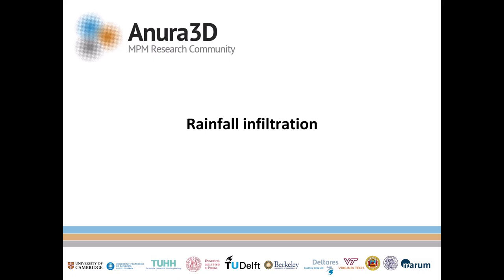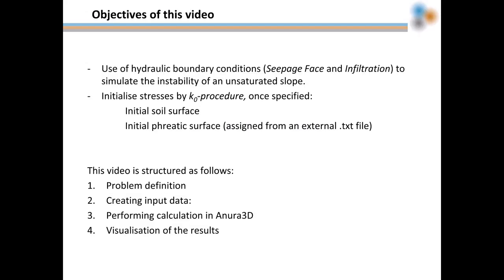This is a video tutorial to guide you in the simulation of the slope instability due to rainfall infiltration exercise presented in Chapter 11 of the Tutorial Manual. The objective is to learn how to deal with the implemented hydraulic boundary conditions, in particular the seepage phase and infiltration, to simulate the instability of an unsaturated slope. Also, in order to apply the Keynote procedure for stress initialization, it will be explained how to define initial conditions in terms of soil surface and phreatic surface assigned from an external text file.